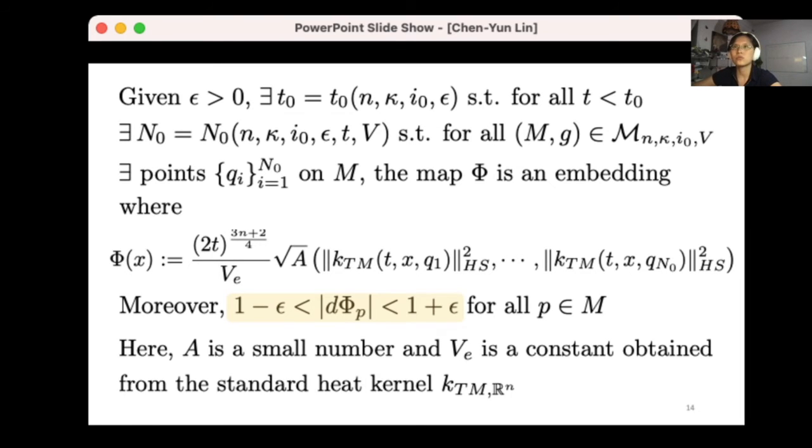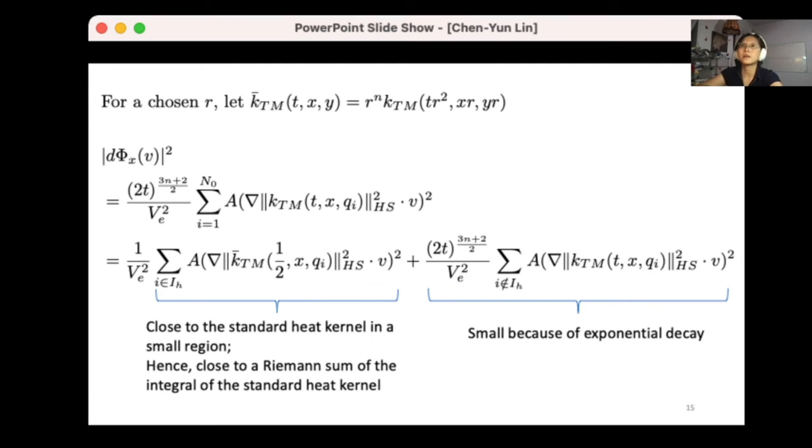I'm not able to show how to choose the qi's and other things, but using the fact that the manifold is locally gradient and the exponential decay of the heat kernel gradient, we are able to see why the dφ is close to 1. Let's do that. After some work, I have a scale r. I can't tell you how to choose the r, but once you have a way to choose r, then you can define a rescaled version, that's called k bar.